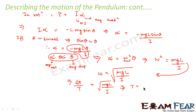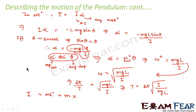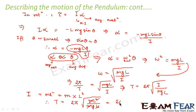By definition, angular frequency omega = 2π/T, so 2π/T = √(MgL/I), which gives time period T = 2π·√(I/MgL). Now, the moment of inertia about the pivot is I = ML² (mass times radius squared, where the radius is the length L of the pendulum). Substituting: T = 2π·√(ML²/MgL). The M and one L cancel, giving T = 2π·√(L/g). This is the expression for the time period of a simple pendulum.